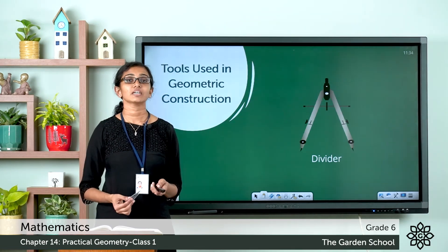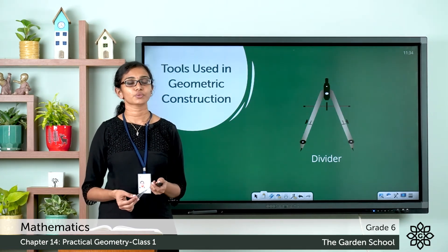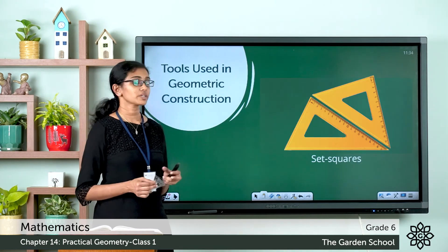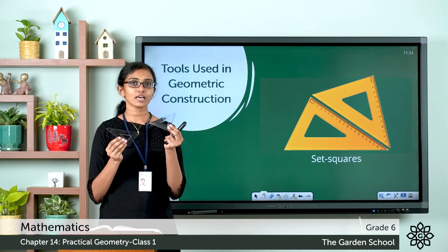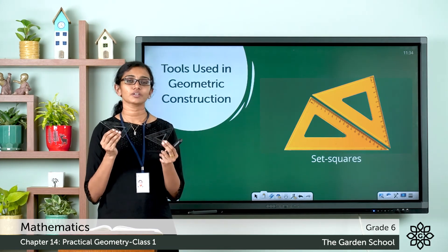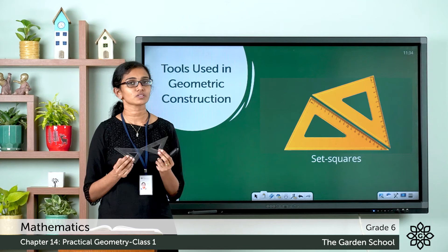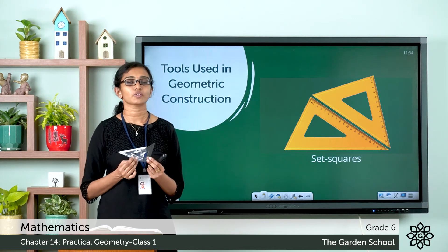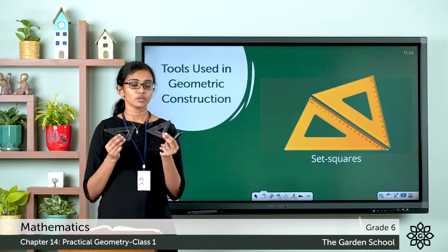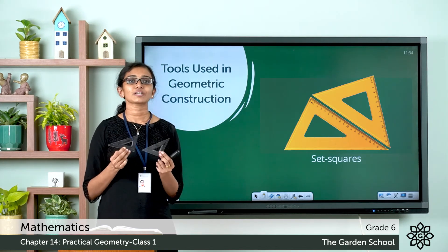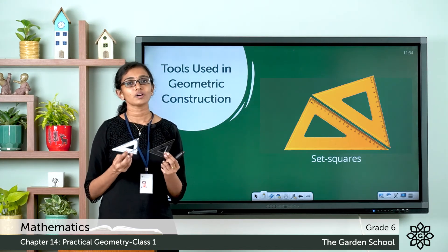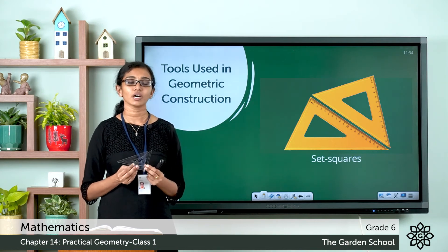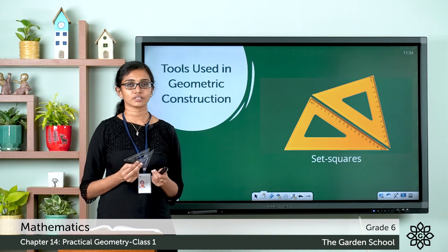Now let's see the next set of tools in your geometry box. We can see two set squares in your geometry box. These are also called triangle protractors. We use set squares to draw parallel and perpendicular lines in our geometry constructions.